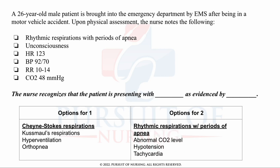The nurse recognizes that the patient is presenting with Cheyne-Stokes respirations, as evidenced by the presence of rhythmic respirations with periods of apnea. Cheyne-Stokes respirations are characterized by rhythmic respirations with periods of apnea. Heart rate, blood pressure, and respiration rate will vary depending on periods of hyper- and hypoventilation. Be able to recognize rhythmic respirations with periods of apnea as an assessment finding associated with Cheyne-Stokes respirations.